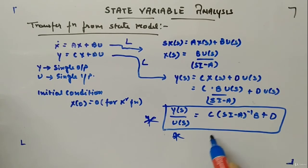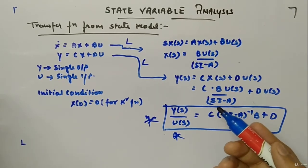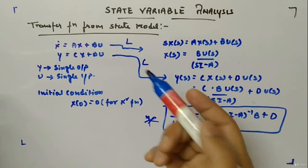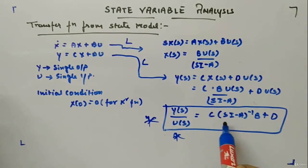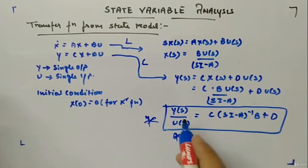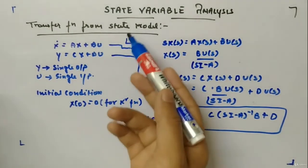Okay, this is a very important equation. Whenever you have to obtain transfer function from a state model, you just have to take A, B, C, D and calculate this value. That will give you transfer function of the corresponding state model.